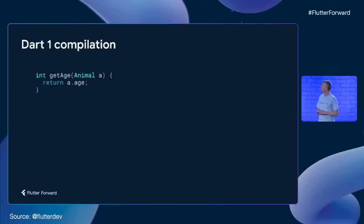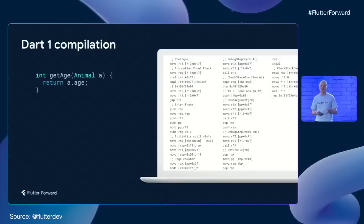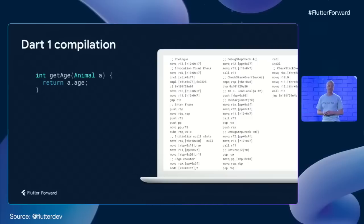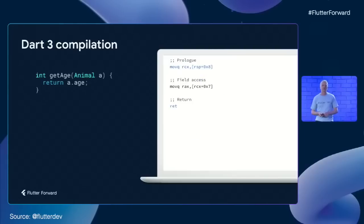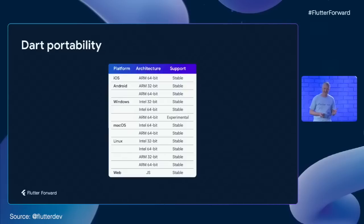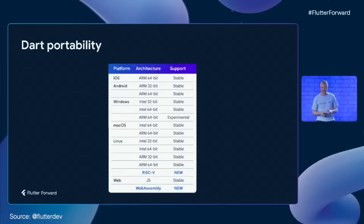When this code compiled to machine code with Dart 1, our compiler produced 26 machine code instructions to have all the needed one-time checking in place. With sound null safety in Dart 2, we could reduce this down to 10 instructions. And in Dart 3, with sound null safety everywhere, we're now down to three instructions. New in Dart 3 is experimental support for the emerging WebAssembly standard.